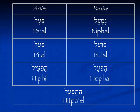Again, a review of the chart of the Binyanim. On the left side we have the active forms: Pa'al, Pi'el, Hifil. On the right side we have the passive forms: Nifal, Pu'al, Hufal. And at the bottom, Hitpa'el, the reflexive form. And we're going to cover all these forms.